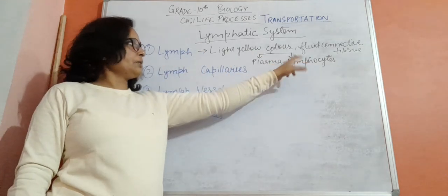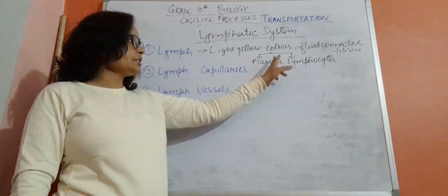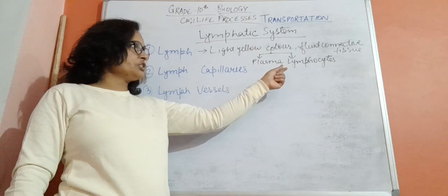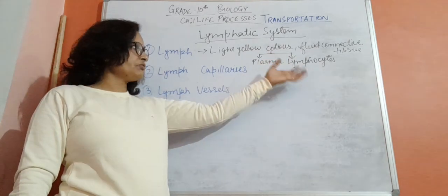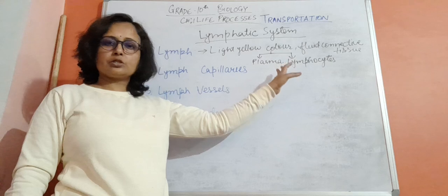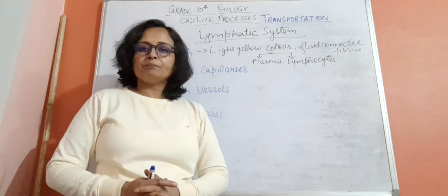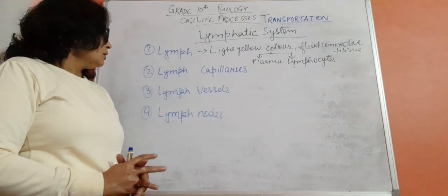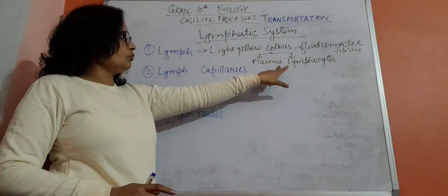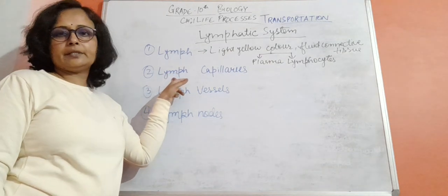Lymph has plasma and lymphocytes. The plasma and liquid parts carry all the molecules we discussed — protein molecules, fat, carbon dioxide, and other things. Lymphocytes are the cells. This lymph then enters the lymph capillaries.